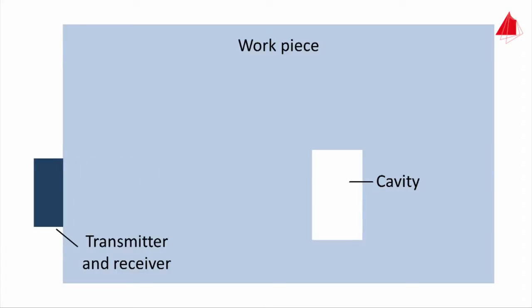For material testing, either the echo of a defect can be utilized—this is the pulse echo mode—or the phenomenon that hardly any sound waves pass through the imperfection. This is called the through transmission mode.